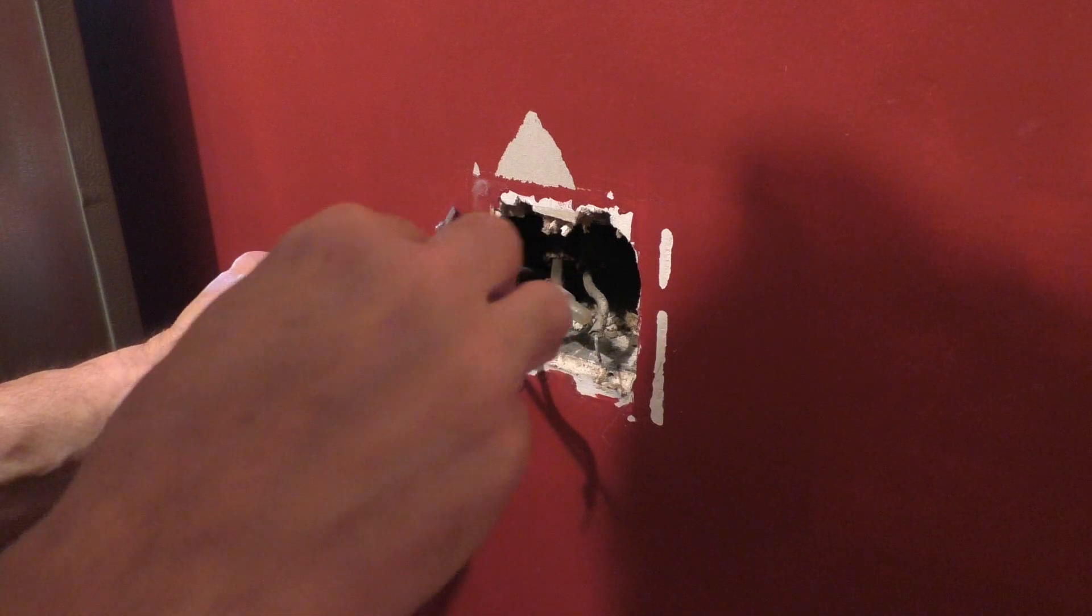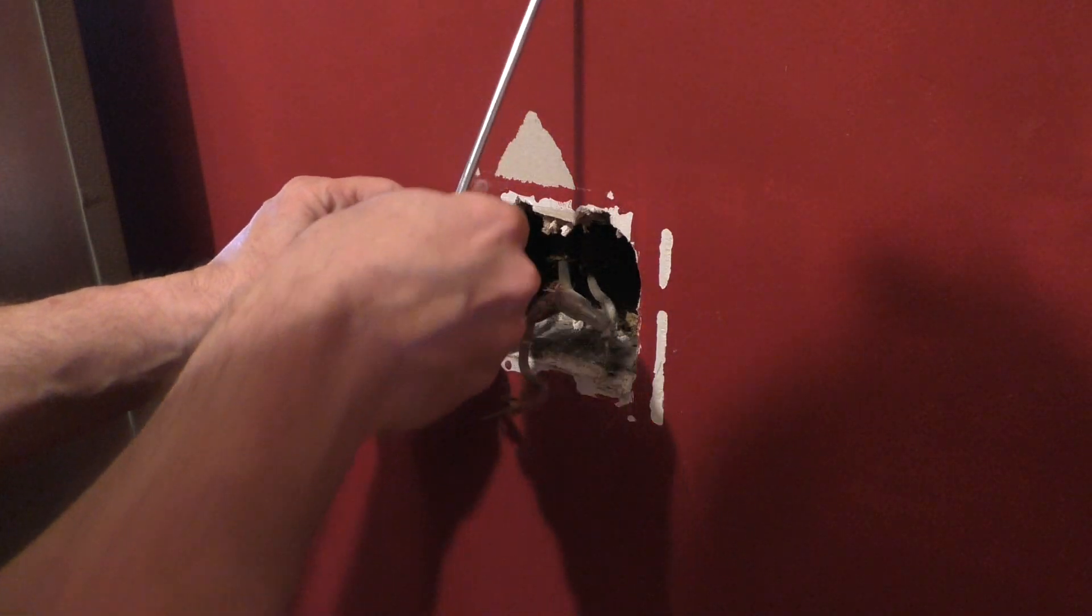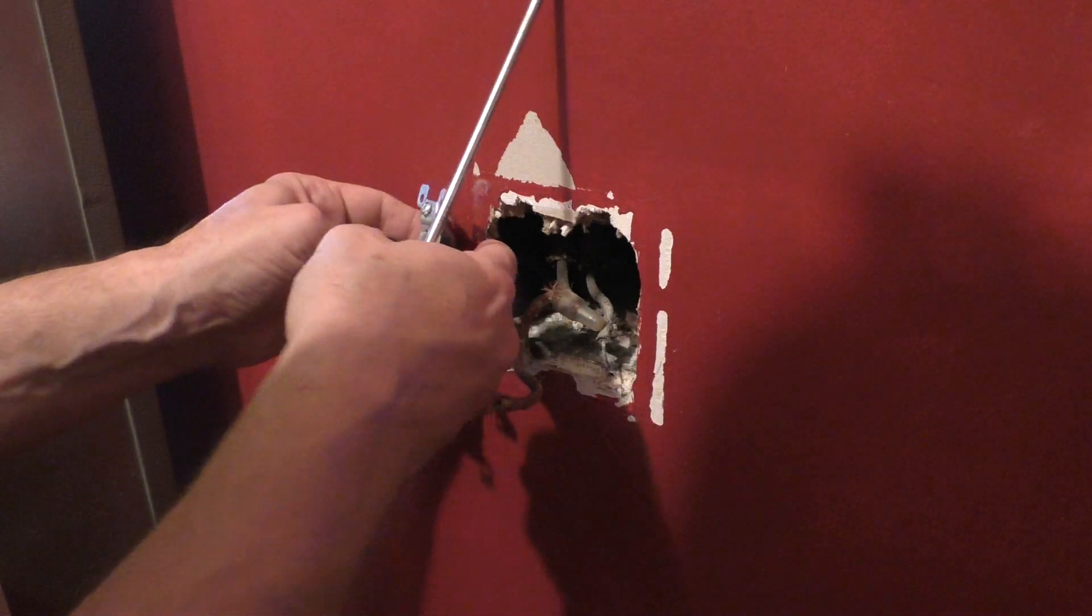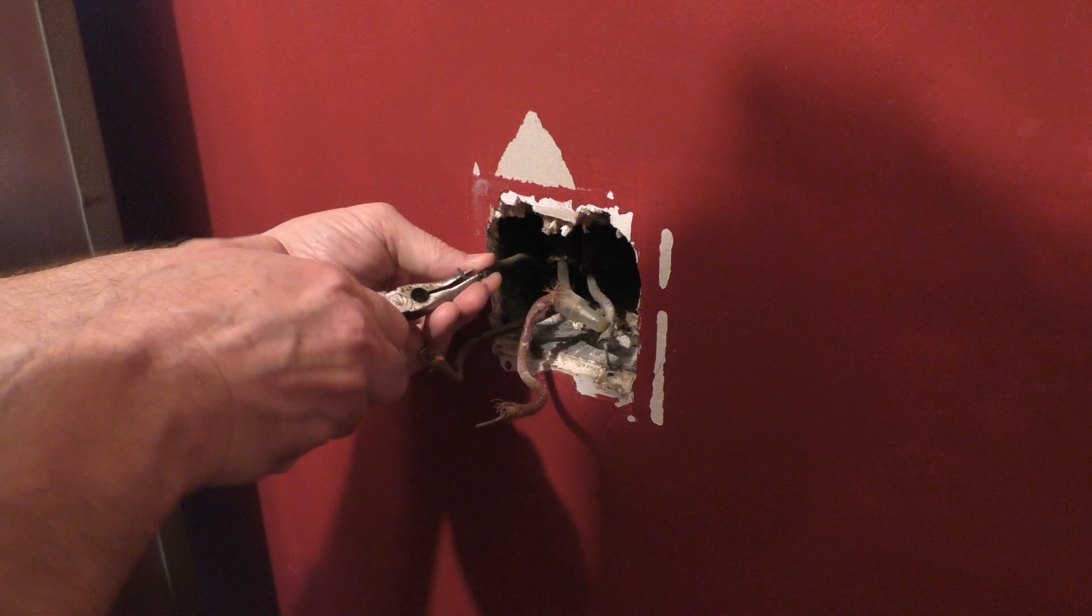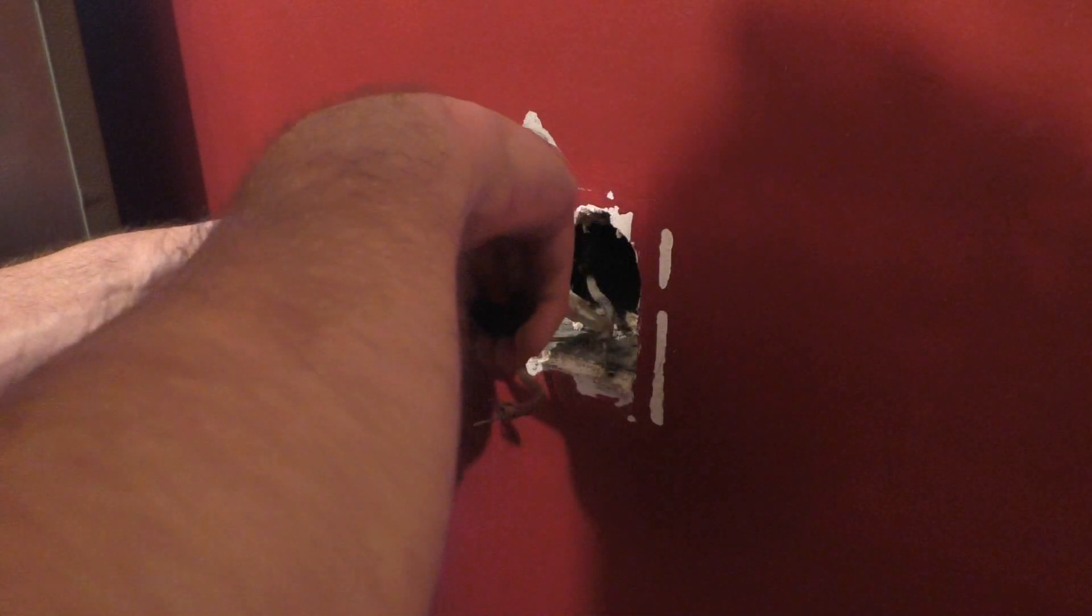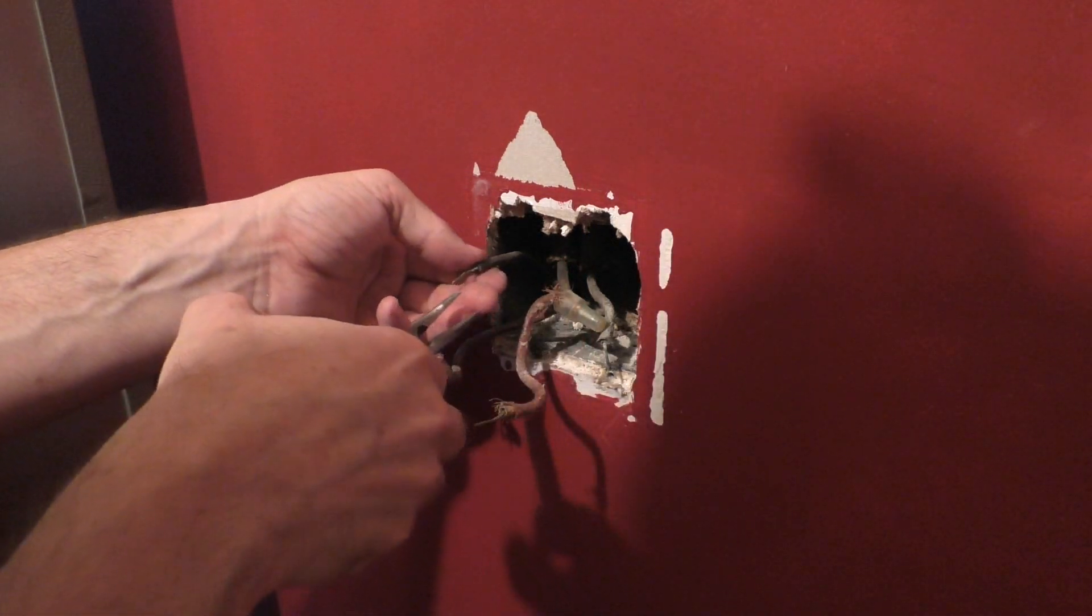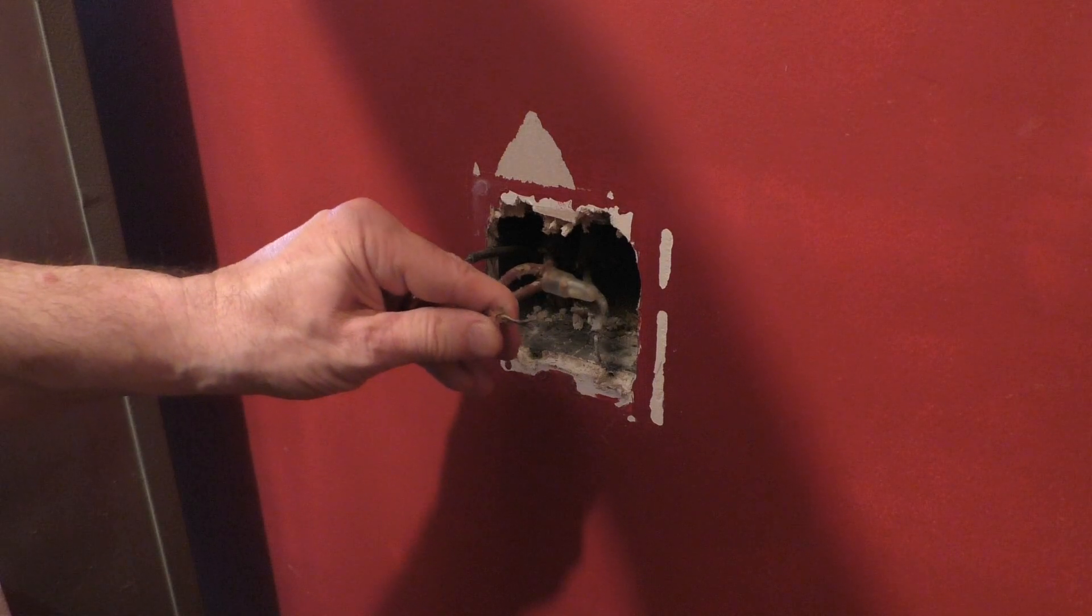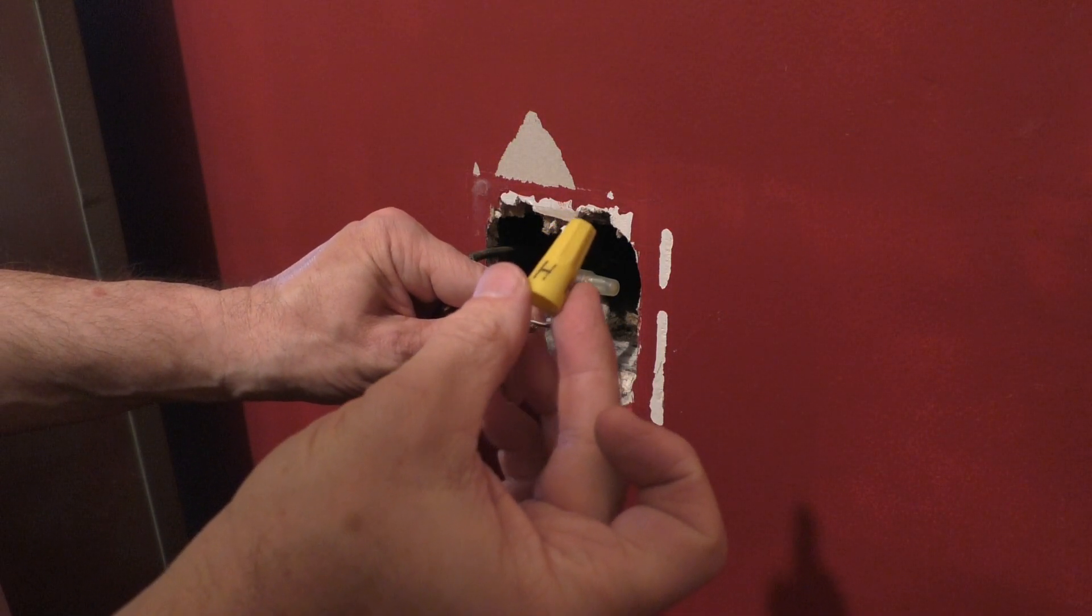The wires for the left light switch were connected to the screws, so they just came out by loosening the screws. I then straightened all the wires and inserted wire caps on each wire, even the dead ones. I did mark the cap for the hot wires with an H for future reference.